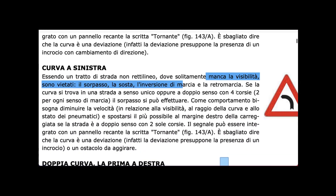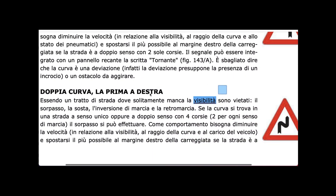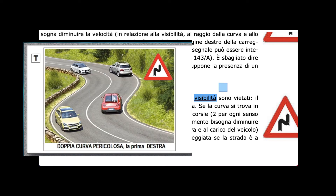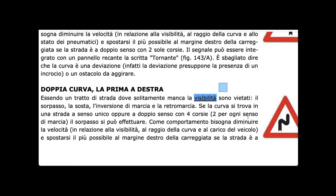Now let's move to 'doppia curva, la prima a destra' — double curves, the first one to the right. The same comportment applies: we have two curves, with the first one going to the right. We need to reduce our velocity, and overtaking is prohibited.